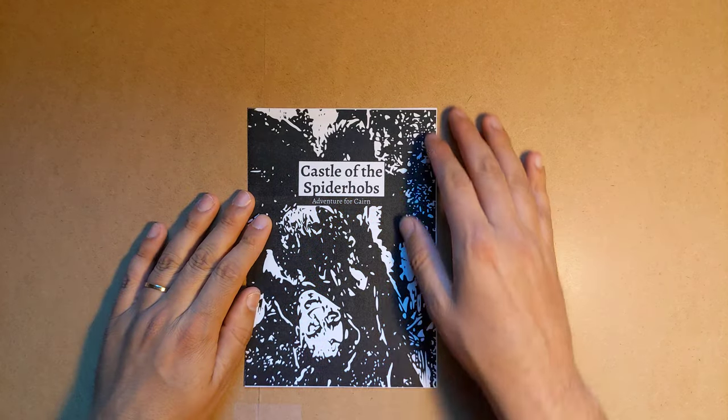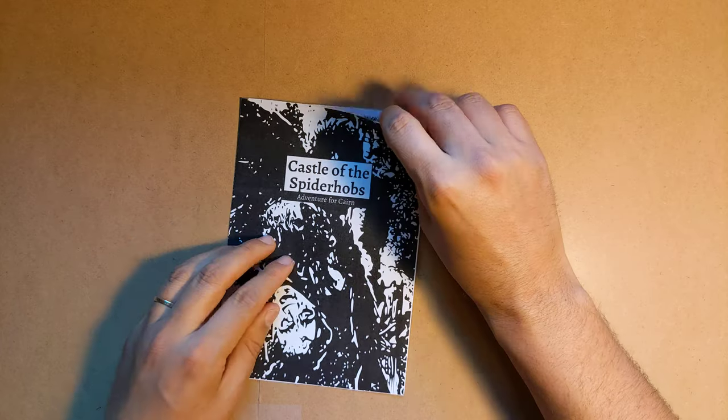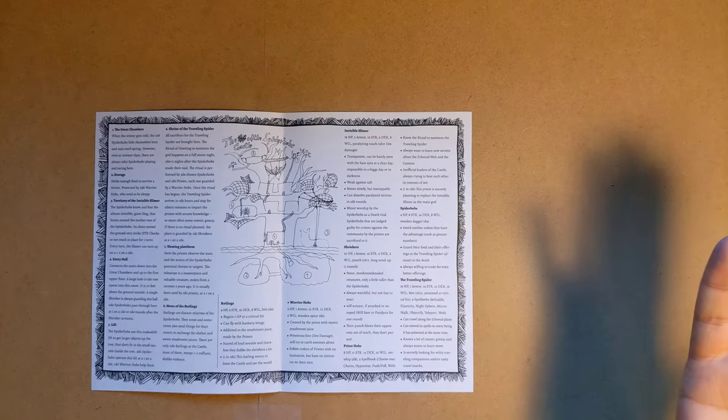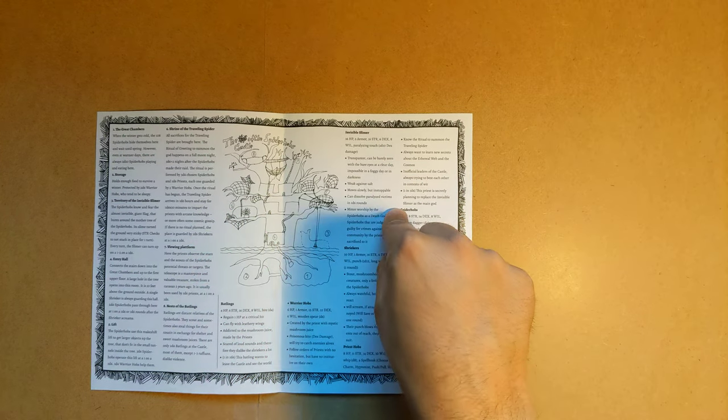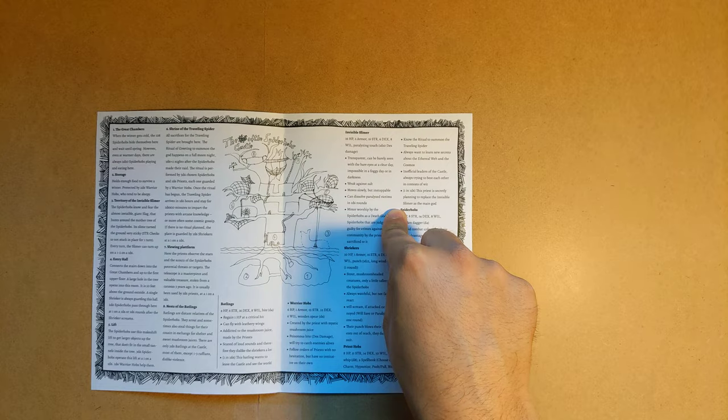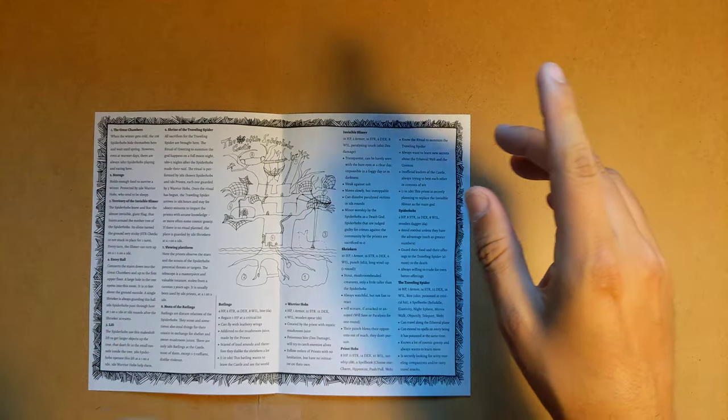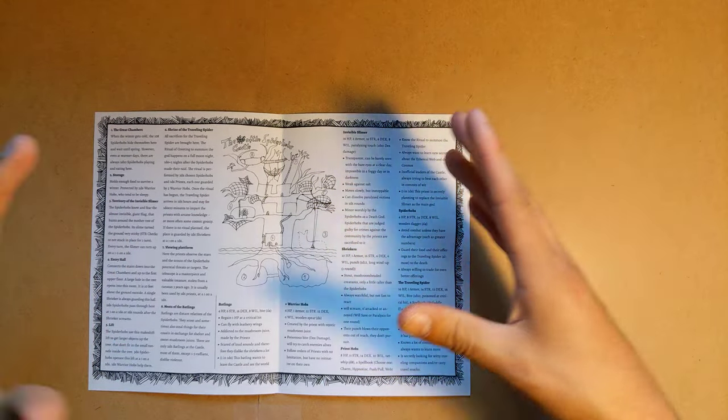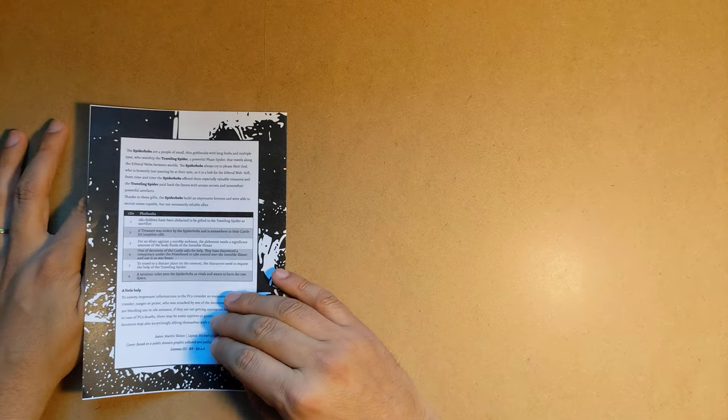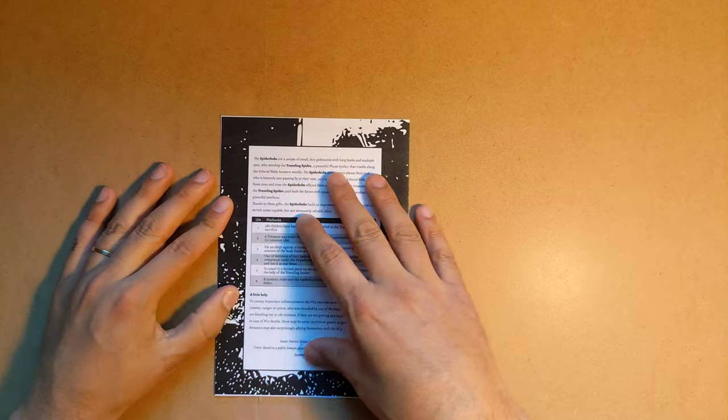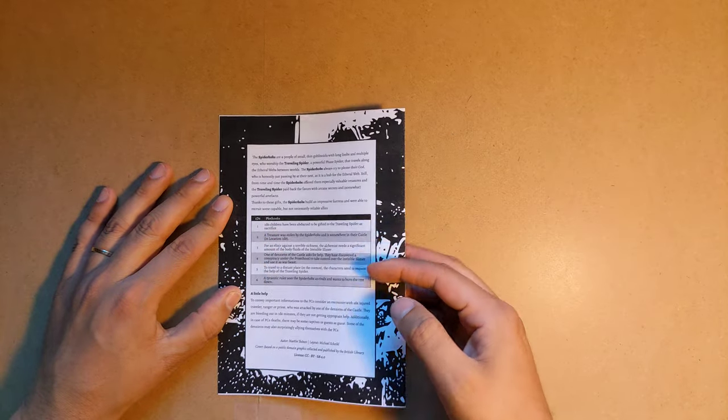Okay, so here's the other German entry. This is Castle of the Spider Hobbs. Looks kind of familiar, right? This one is from Doc Astaroth, and it's an adventure site about a cosmic spider worshipping goblinoid clan. I think this is like a giant tree. You can see the same kind of German Cairn style. The German-Deutsch team is pretty good about developing their own style, so you can see that.